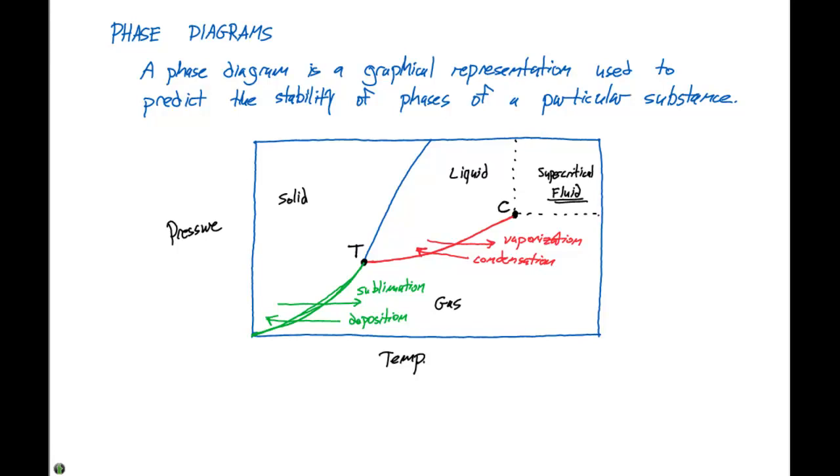It represents the change in vapor pressure of the solid as it sublimes at different temperatures and pressures. So that's the green part of the curve.